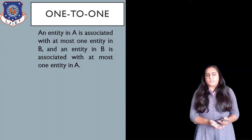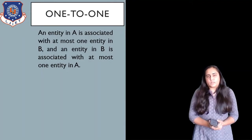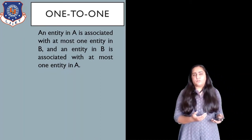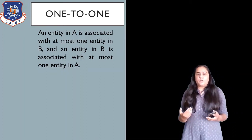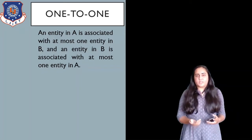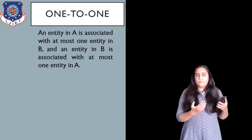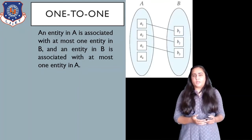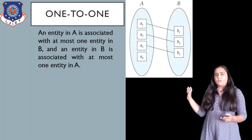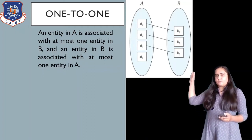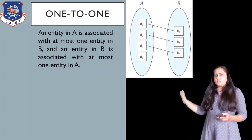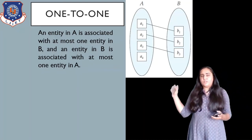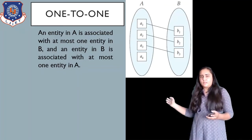One of the cardinalities is known as a one-to-one cardinality. In this, an entity in set A is associated with at most one entity in set B, and an entity in set B is associated with at most one entity in set A. You can see in A there are several entities, and in set B there are several entities, and everything from A is linked with only one entity in B.